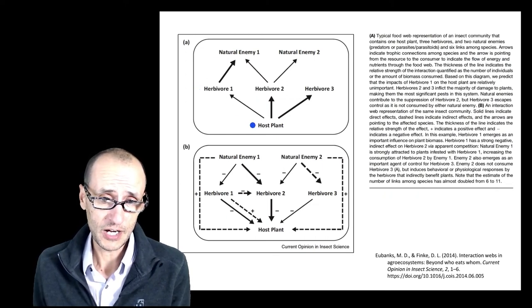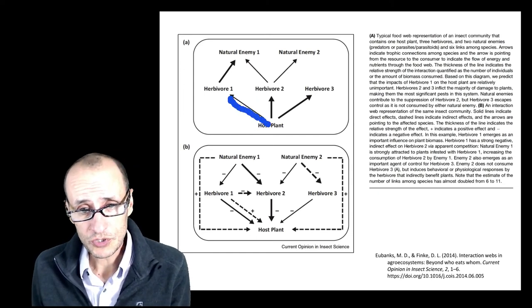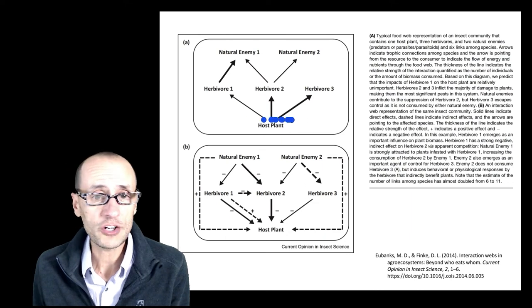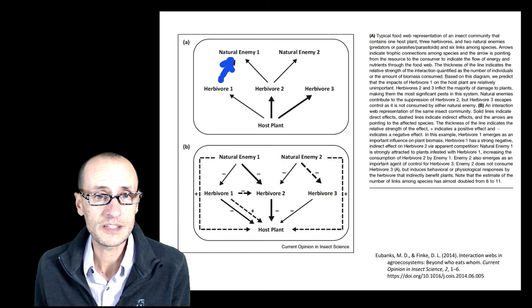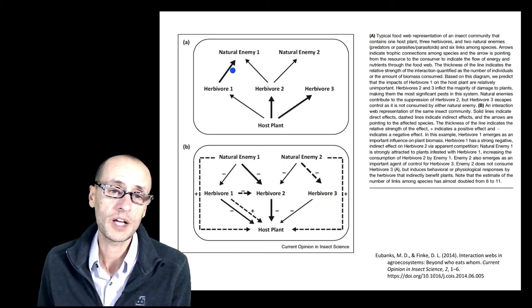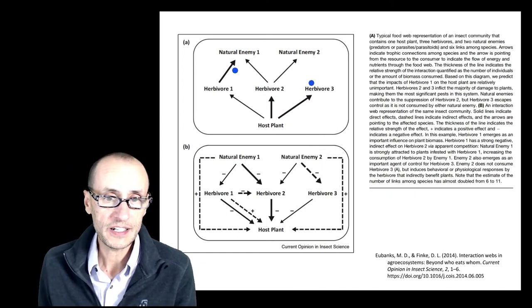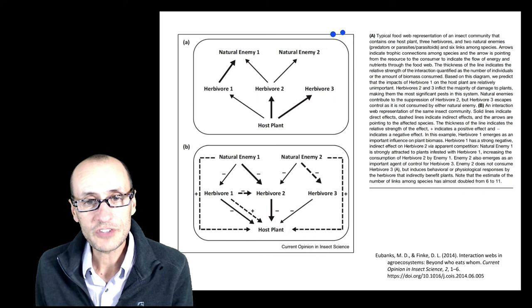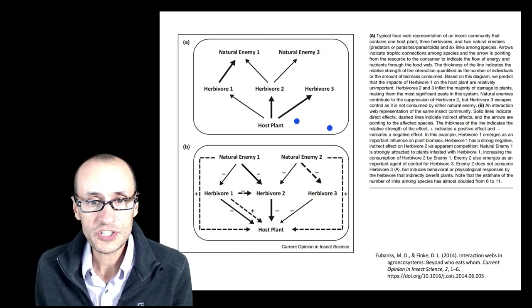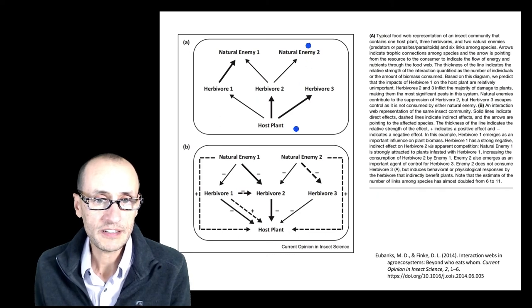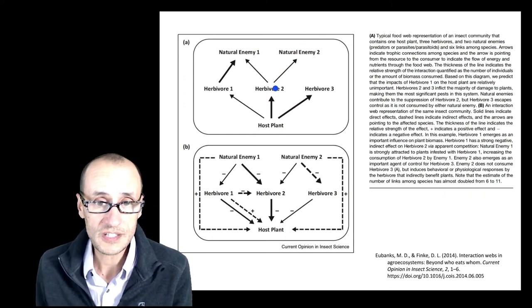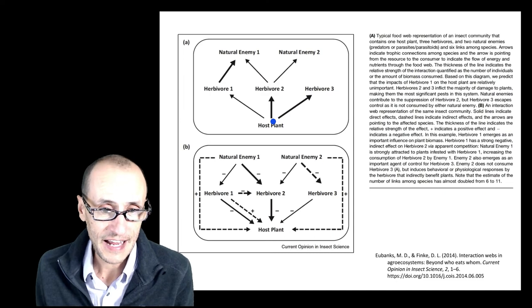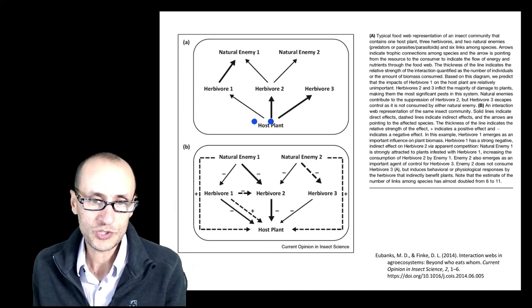And if you look at the directionality of these arrows, this is the classic way of thinking about energy flow in the system. Host plant material gets consumed and assimilated into the body tissues of an herbivore, which in turn gets consumed and assimilated into the body tissues of the natural enemies that can find it and eat it. And so a lot of the early field of food web ecology was really trying to understand how do these systems work? How do we predict the consequences of having predators given these types of energetic types of interactions where somebody eats somebody else and that has a cascading effect on the lower trophic levels?